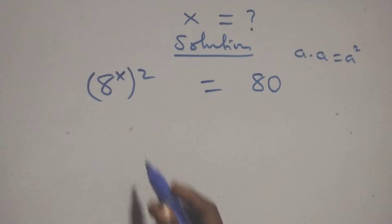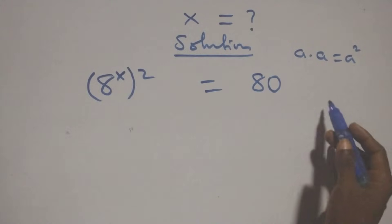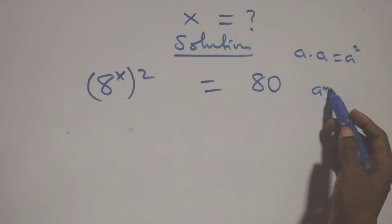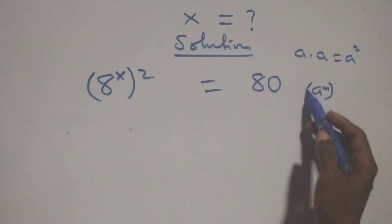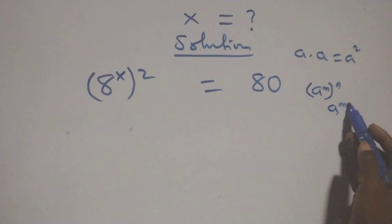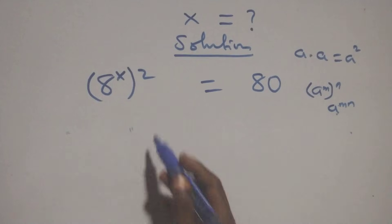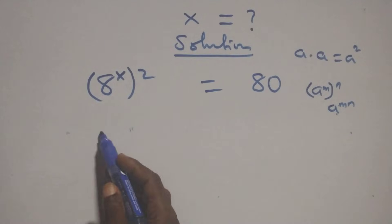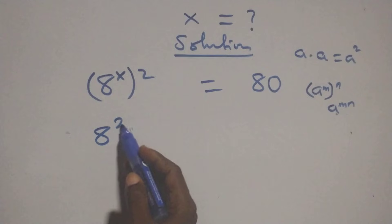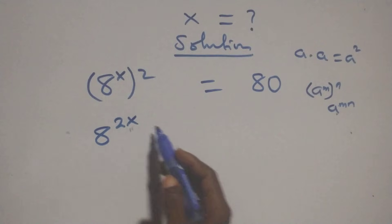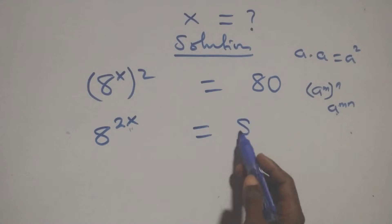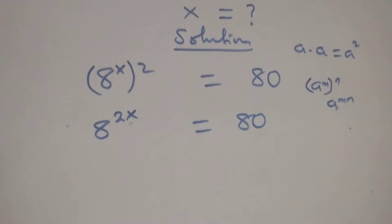Then, this also follows the rule that a raised to power n, raised to power n, is the same thing as a raised to power mn. Since the powers multiply, we have 8 raised to power 2x equals 80.